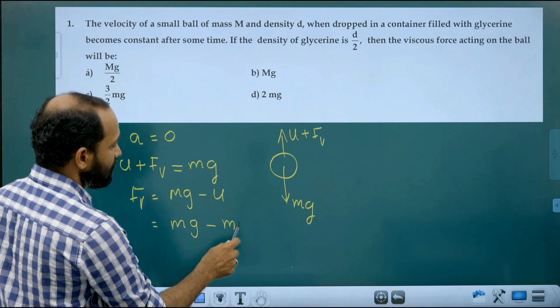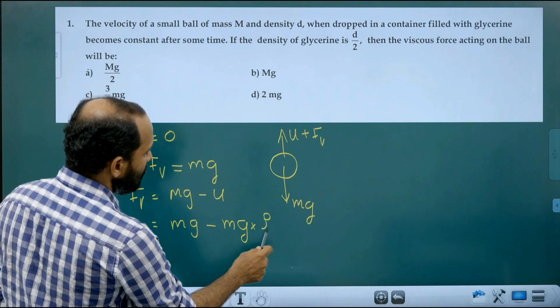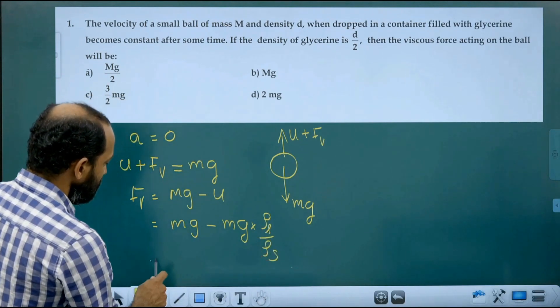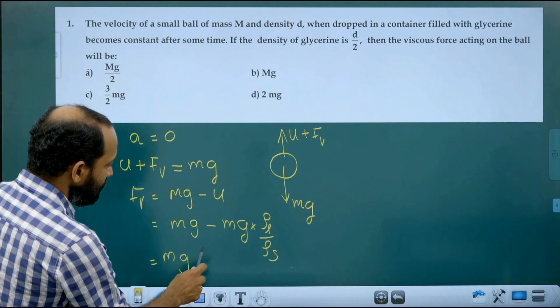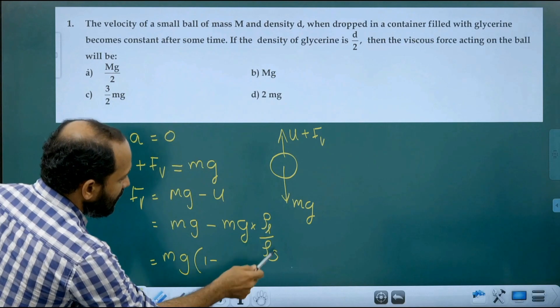Upthrust can be written as weight in air multiplied by density of liquid divided by density of solid. That is equal to mg multiplied by 1 minus rho L by rho S.